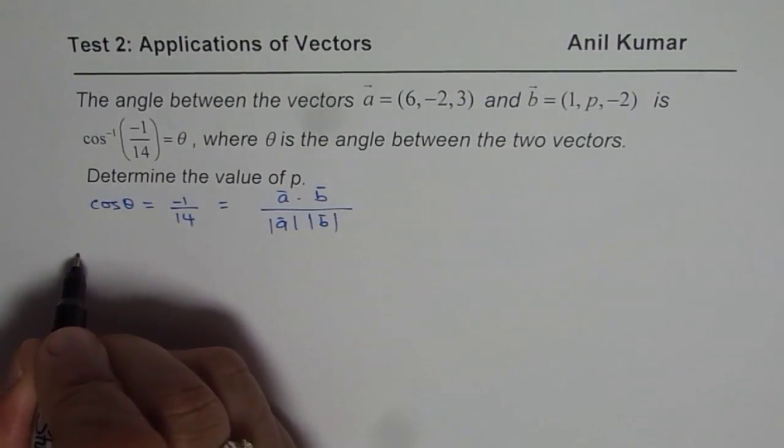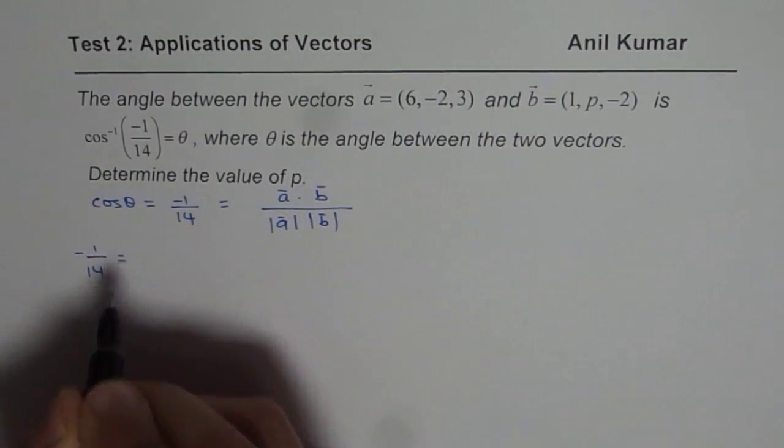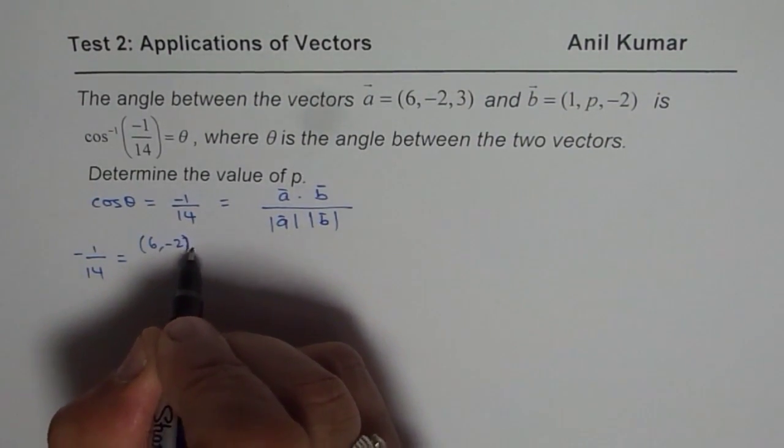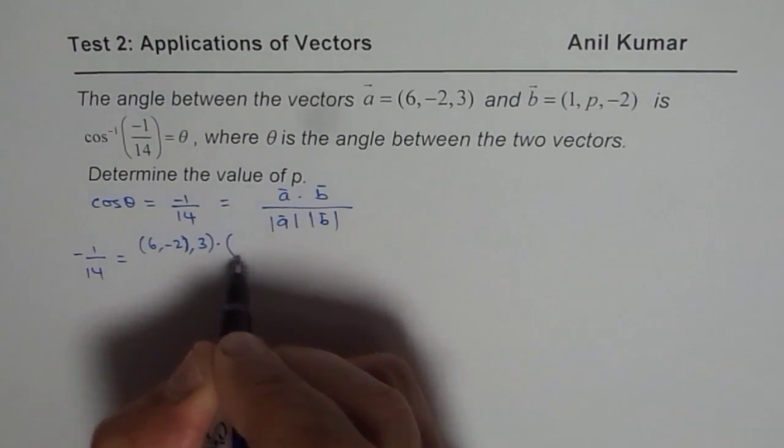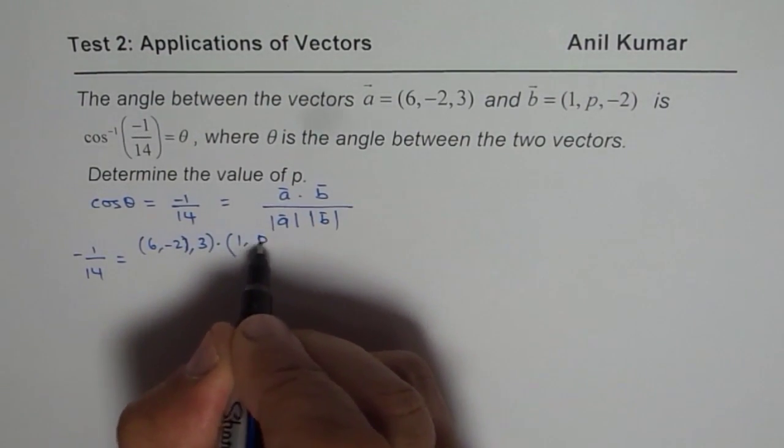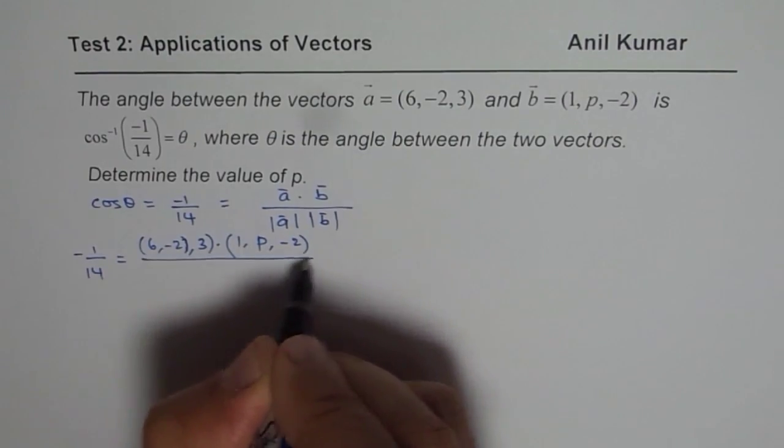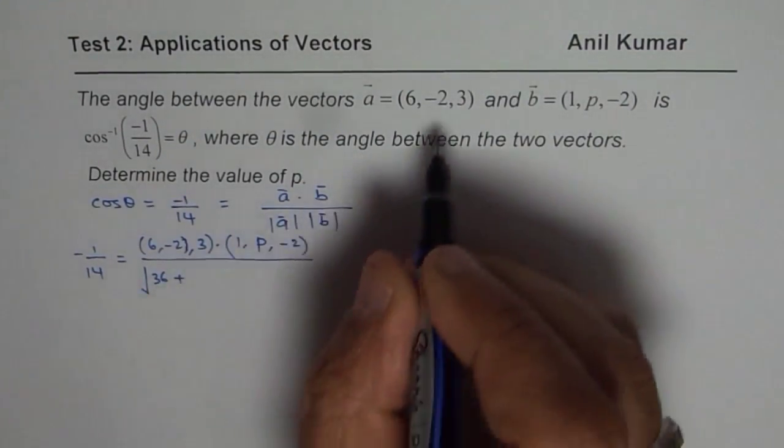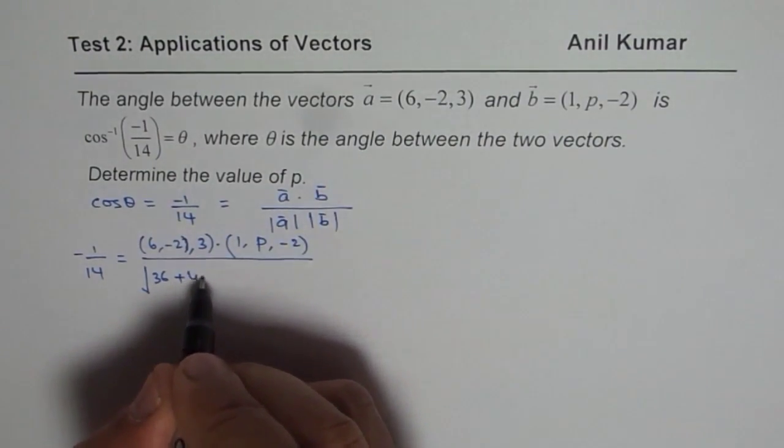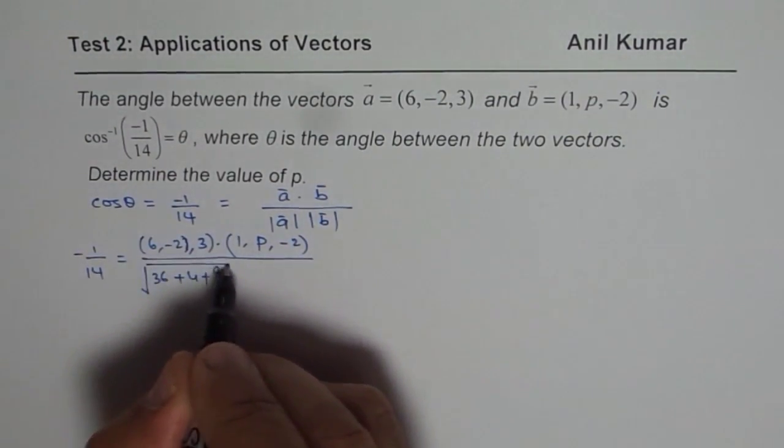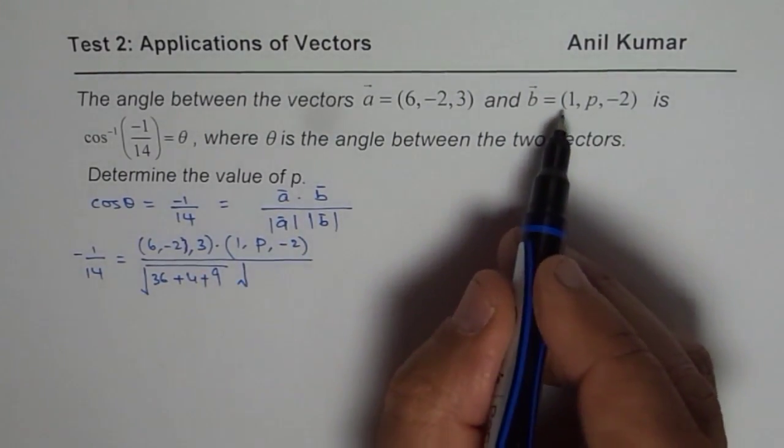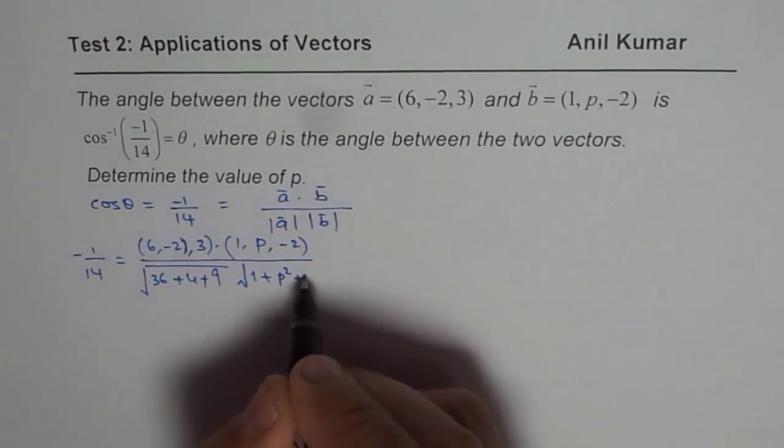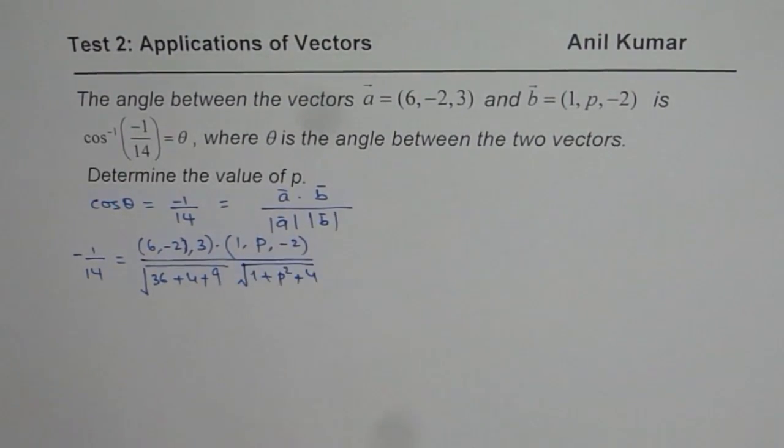So we will rewrite this as -1 over 14 equals to vector A which is (6, -2, 3) dot B which is (1, p, -2) divided by square root of 6 squared, so we will write 36 here, plus -2 squared which is 4, plus 3 squared which is 9, times square root of 1 squared which is 1, plus p squared, plus 2 squared which is 4. So that is all we can get.